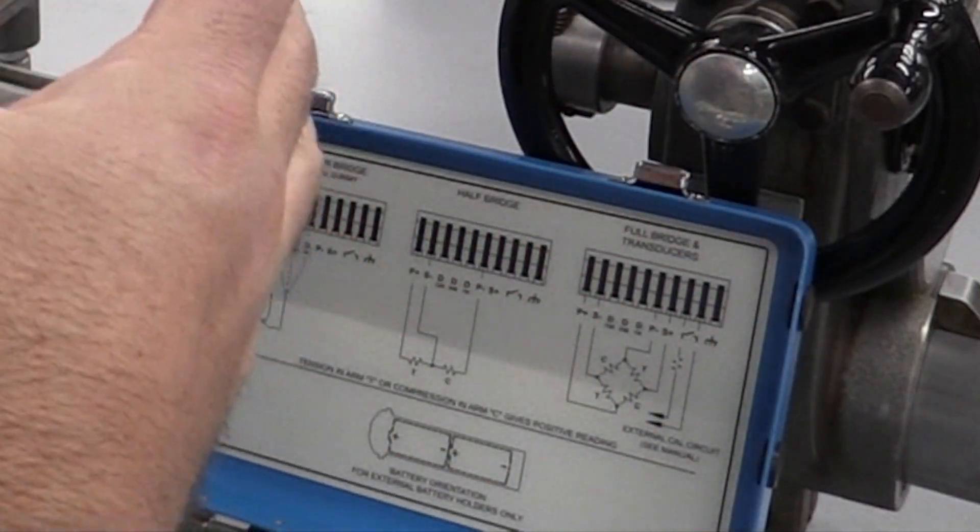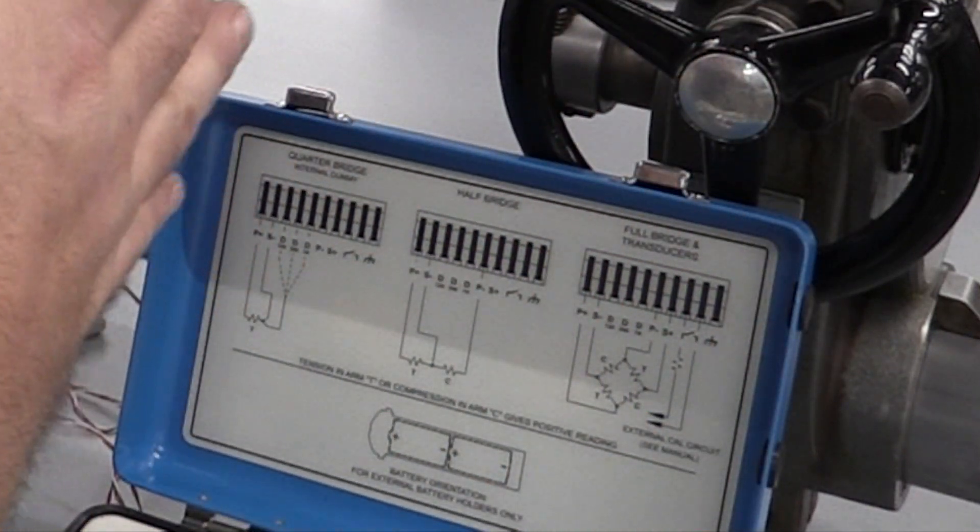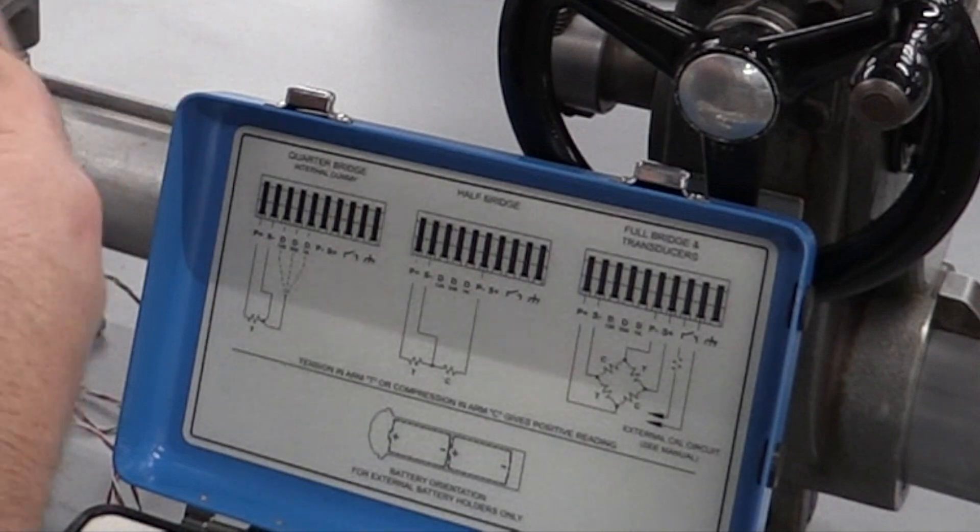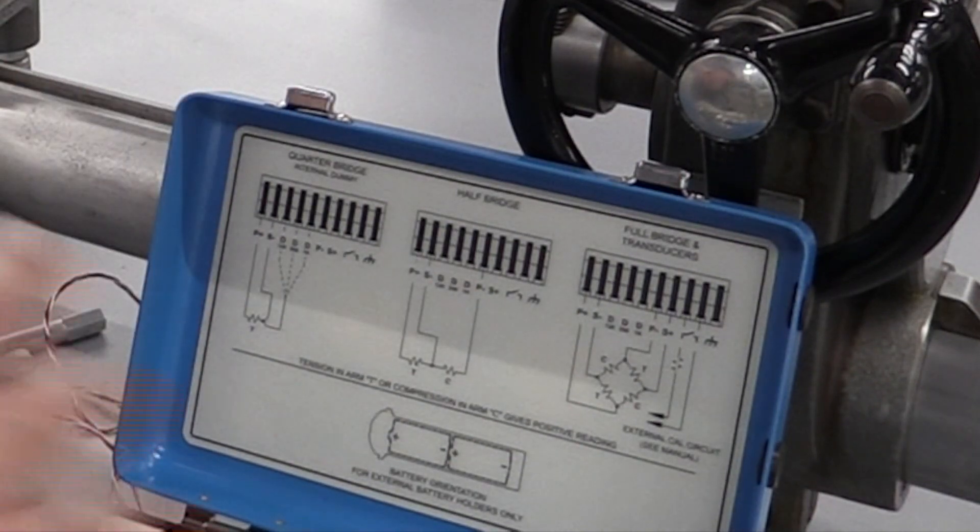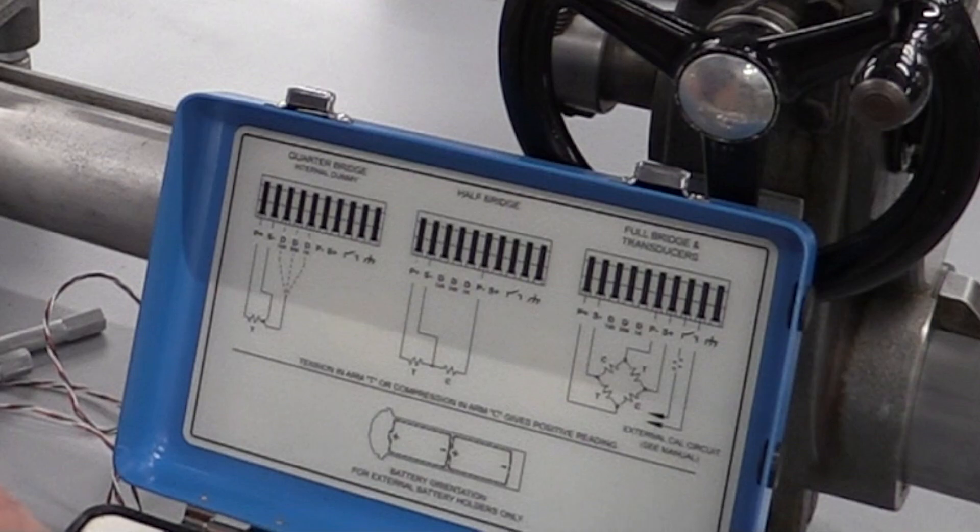Now if it gets compressed it is gonna get shorter, it's gonna allow less resistance and we're gonna be able to measure that as well. So it's kind of like an ohmmeter if you want to think about that. We can measure that micro strain.